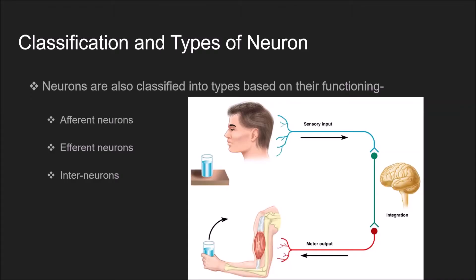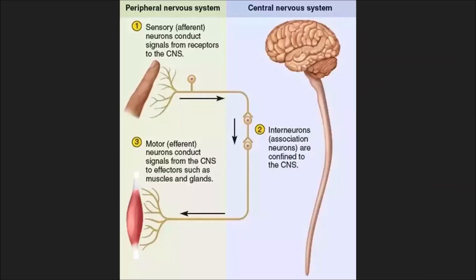Classification and types of neurons. Neurons are also classified into types based on their functioning, namely afferent neurons, efferent neurons, and interneurons. Afferent neurons are sensory neurons that carry nerve impulses to the central nervous system. They are affected by changes in the environment.